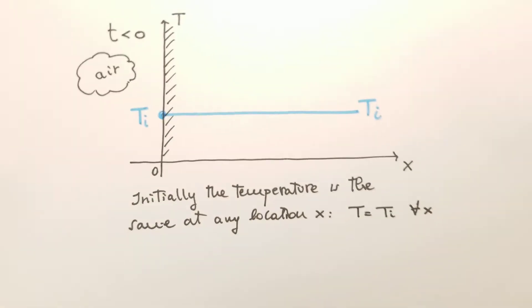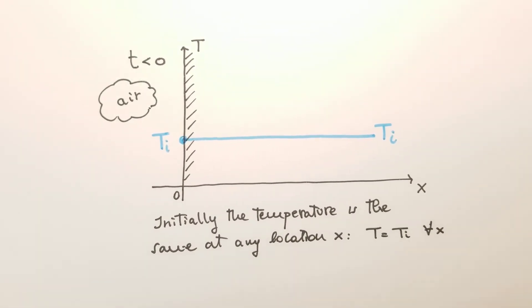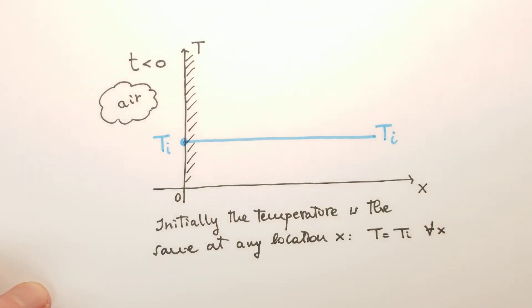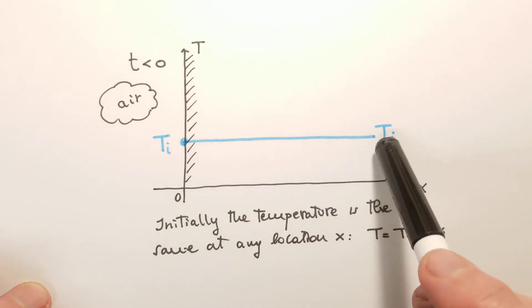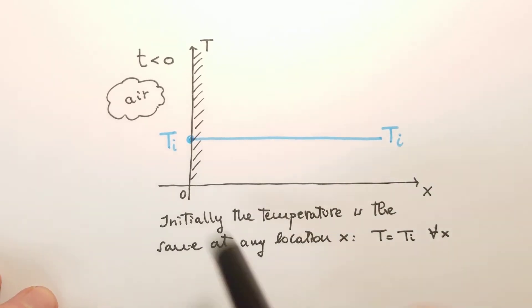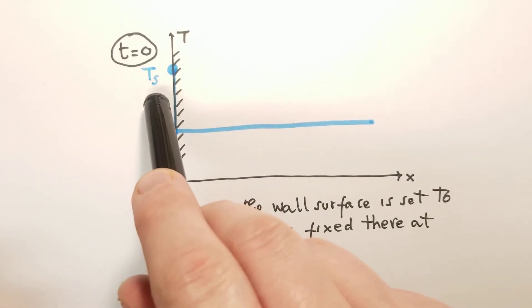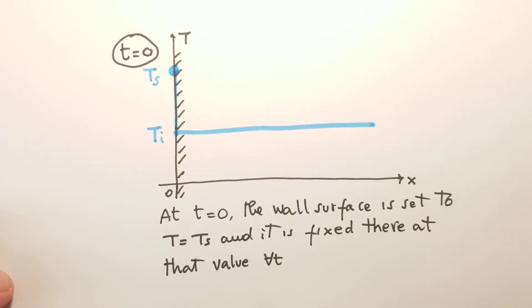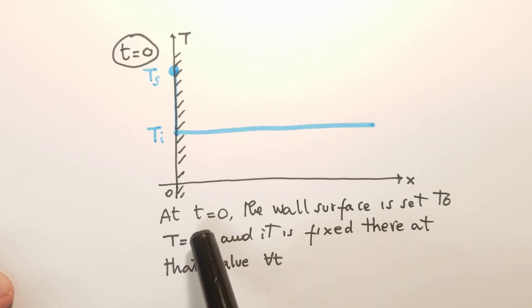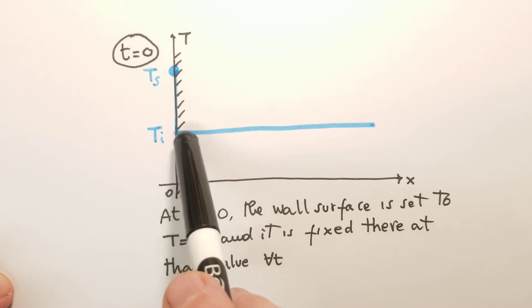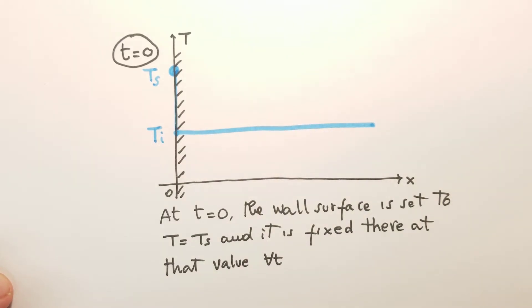We consider a semi-infinite solid. Initially, at time less than zero, the temperature of the semi-infinite solid is uniform — we have Ti everywhere inside the solid. Then at time T equals zero, we change the temperature of the surface and set it equal to Ts. We assume this surface temperature does not change over time. So at T equals zero, the surface has temperature Ts, but all the points inside the body still have temperature Ti, because they have not yet felt the change in boundary condition.